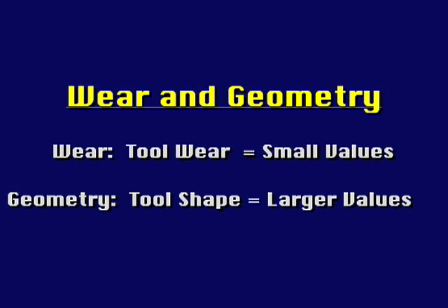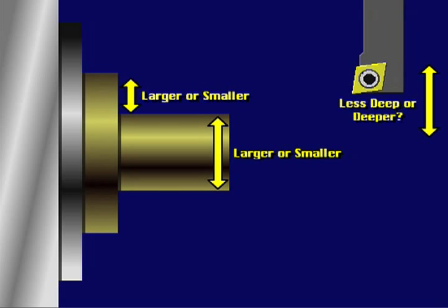Geometry offsets are used to define the shape of a tool after it has been mounted in the machine and may be a larger value. It's important to remember that these offsets affect the depth of cut created by the tool. The result can be a larger or smaller workpiece feature depending on what is being measured.